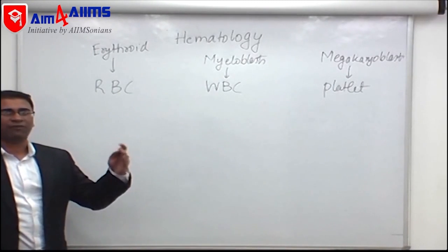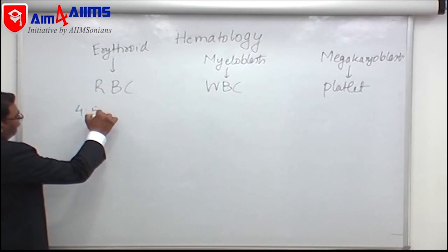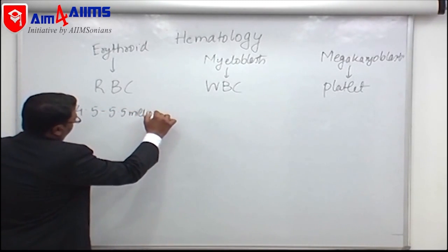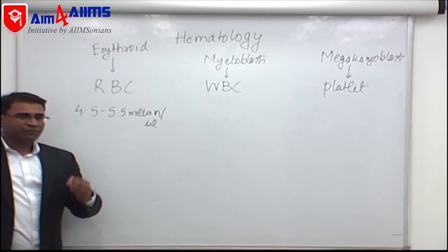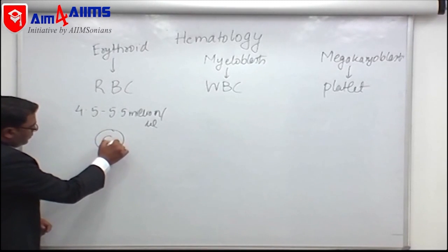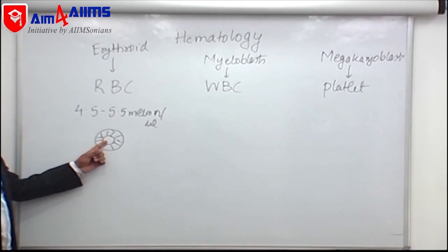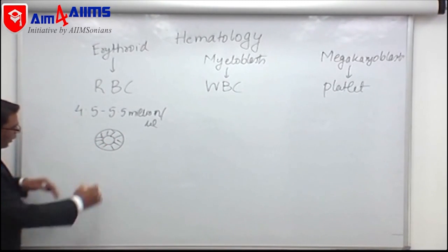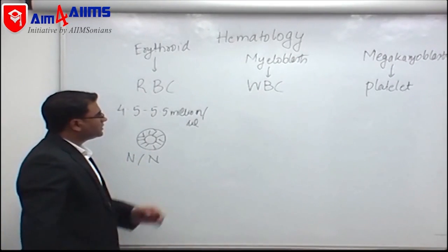Before we go into core pathology, we should know the normal values. RBCs are 4.5 to 5.5 million per microliter. Normally when we see an RBC, the surrounding area is stained and in the center there is no stain — we call this central pallor. This is called normocytic.